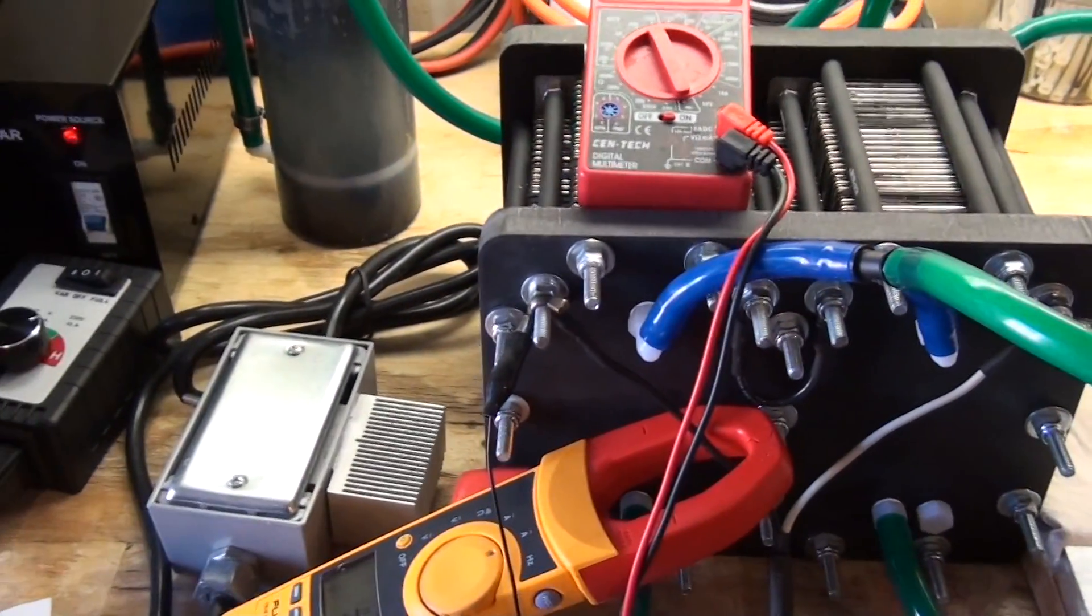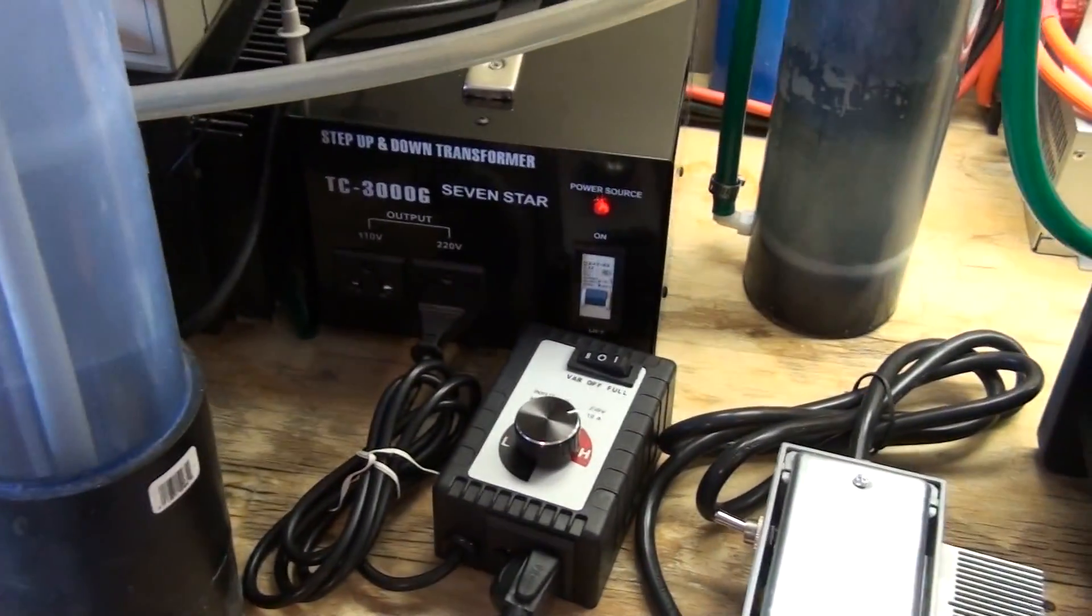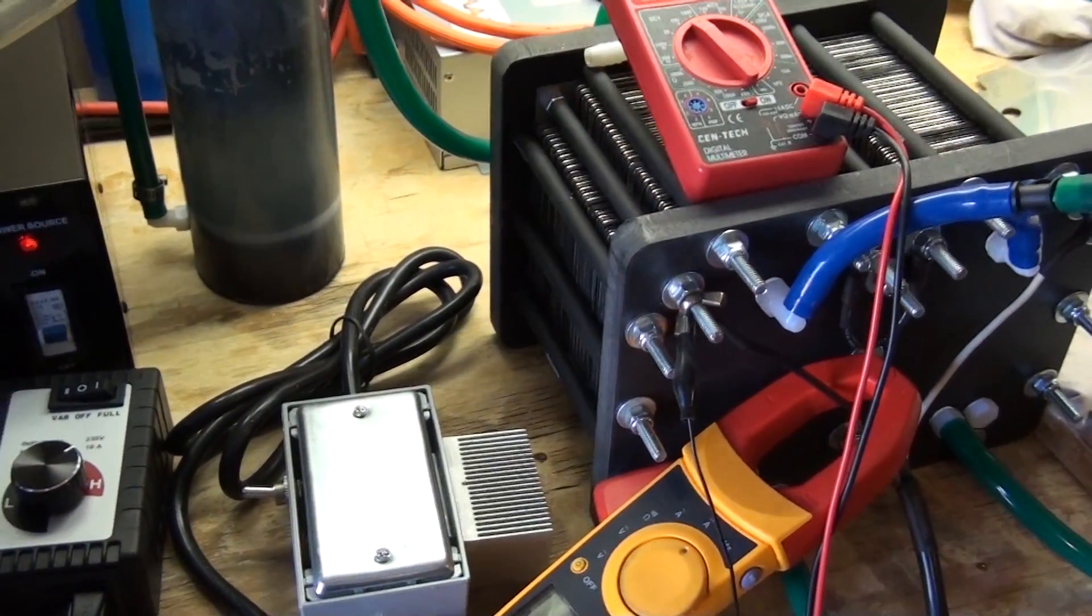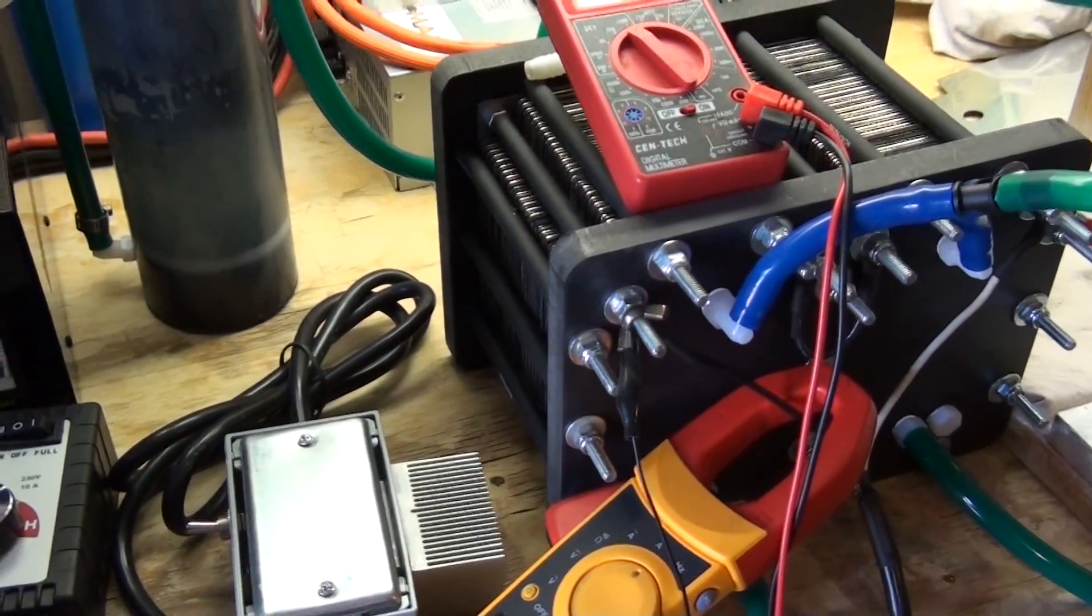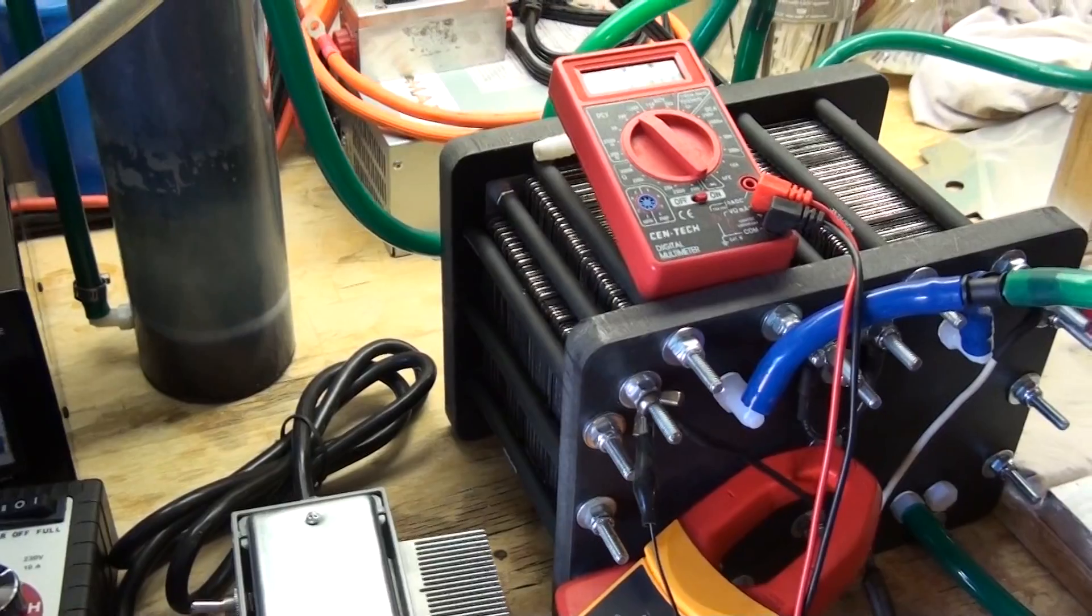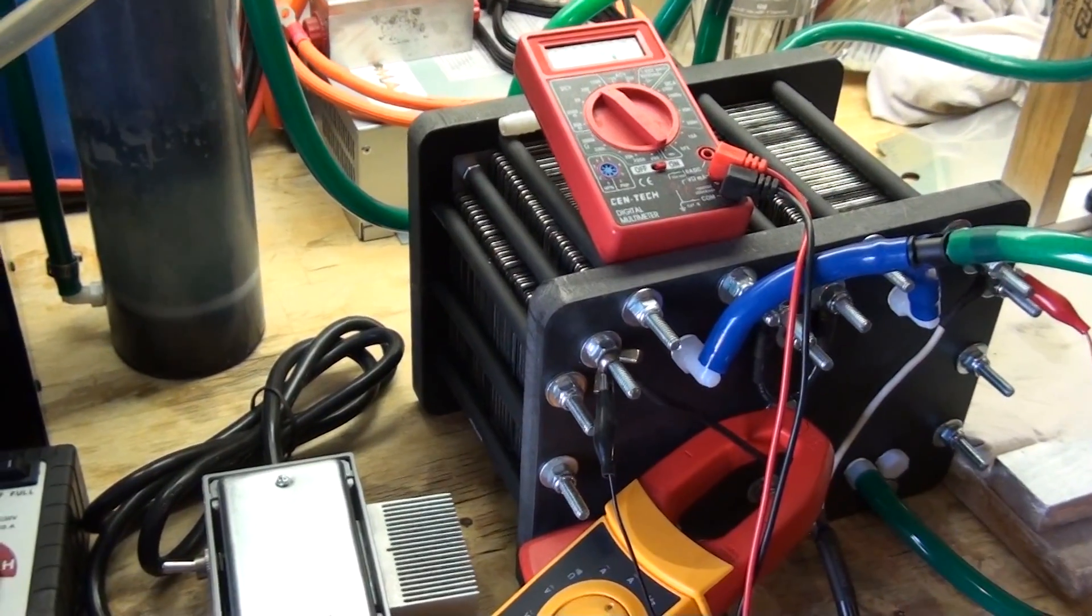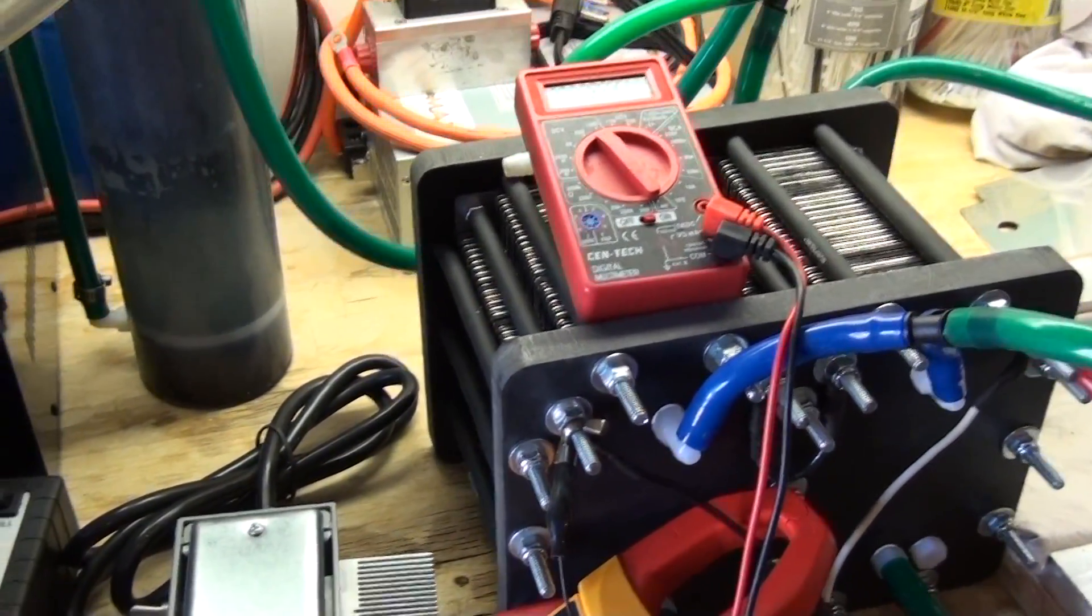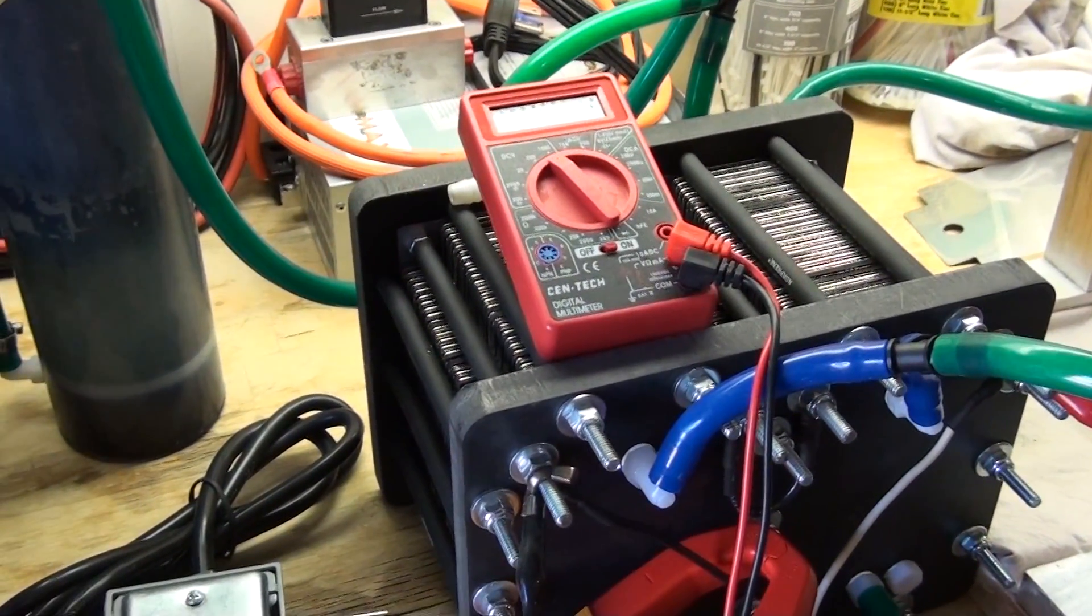I get asked all the time what the applications would be for a generator like this, especially one that plugs into house current or line current. And not all HHO applications are just for automobiles, but what this would be used for is mostly standby generators or power generation systems to lower the amount of fuel consumption of a gas generator or diesel generator. So if you've got a 120 volt or 220 volt generator, you could plug this right into it and lower the fuel consumption of the generator.